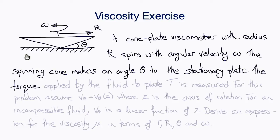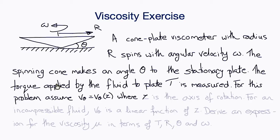The torque T applied to the plate by the fluid is measured by the device. For this problem, you can assume that the circumferential component of the velocity, vθ, is only a function of z, where z is the axis of rotation. And for an incompressible fluid, we can show that vθ is a linear function of z.